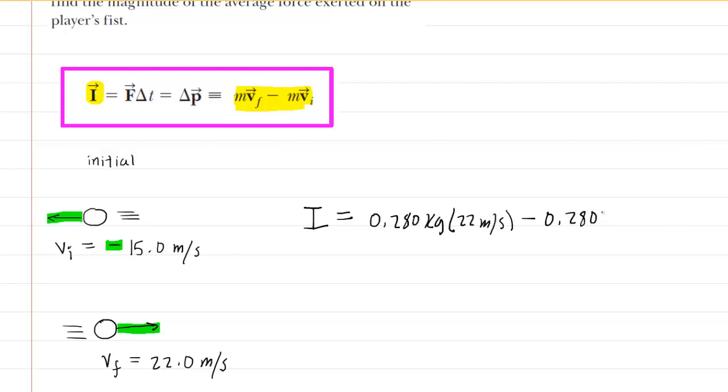we actually could have factored that mass out, but we didn't, multiplied by the initial velocity of negative 15 meters per second. Punch this into your calculator very carefully. Notice the minus and minus here will actually make this an addition problem. When we punch this in, we end up with an impulse of 10.4.